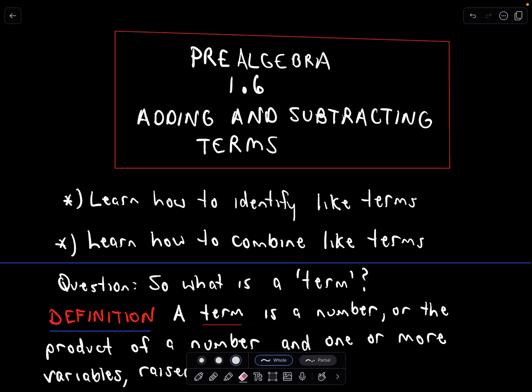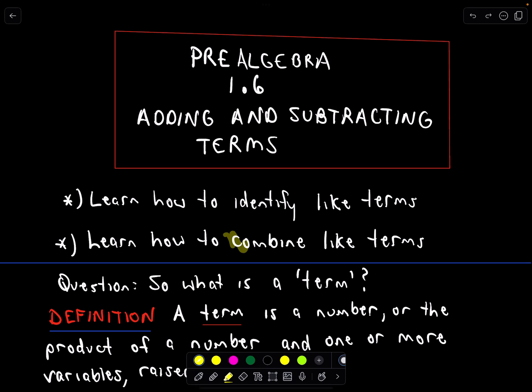Here we're going to look at section 1.6 of the pre-algebra series: Adding and Subtracting Like Terms. We're going to talk about how to simplify and do arithmetic involving expressions with variables. The first thing we'll do is learn how to identify like terms, and then once we can group them together, we'll talk about the arithmetic involved in combining those like terms.